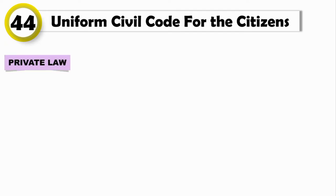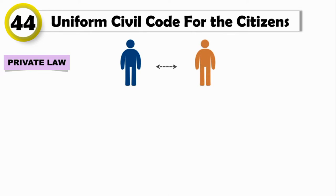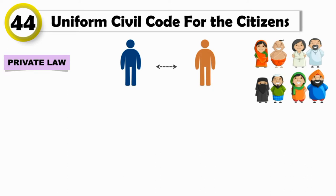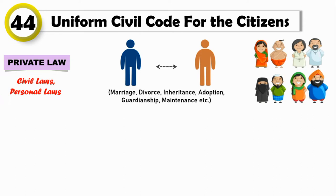Whereas private laws are those laws which regulate individual versus individual relations and which are mainly concerned with a particular community. Private laws are also known as civil laws or personal laws that are applied to a certain class or group of people or a particular person based on religion, faith, and culture. Under this comes marriage, divorce, inheritance, adoption, guardianship, maintenance, etc.